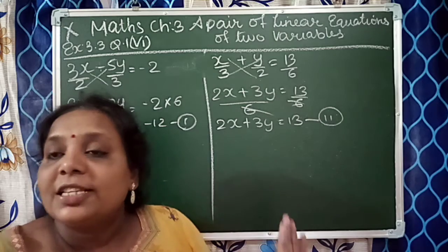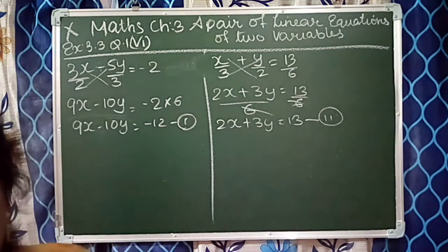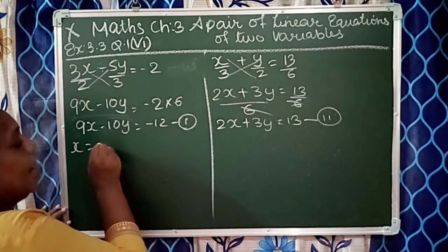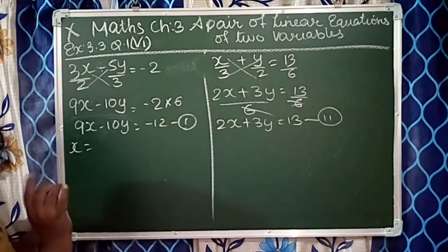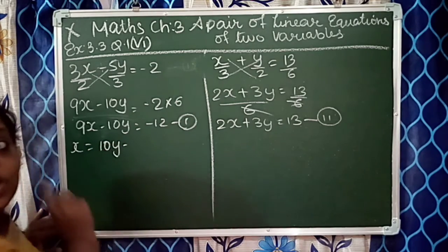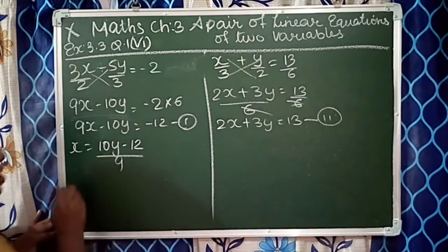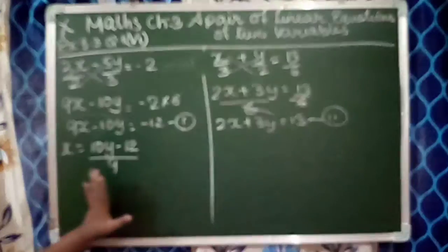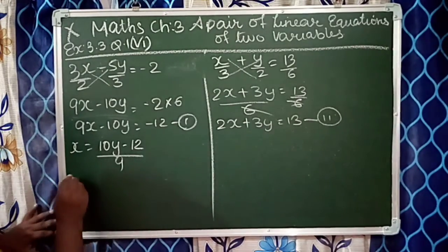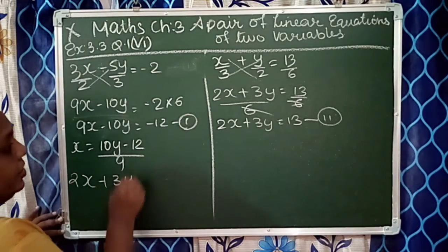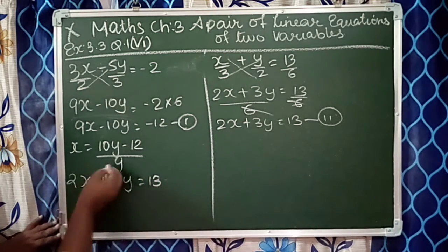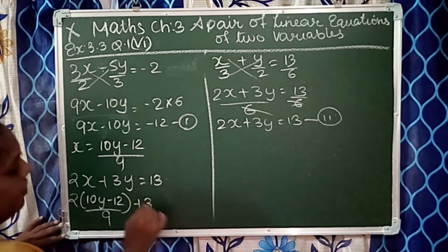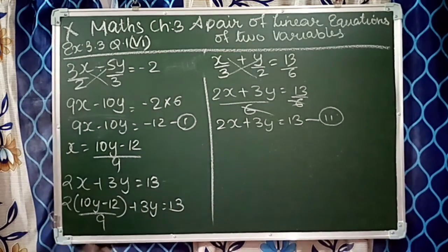Now from the given first equation, we'll find x. x is equal to 10y minus 12, upon 9. We got the value of x. Now we'll substitute the value of this x in equation 2. In equation 2, which is 2x plus 3y is equal to 13, we'll substitute the value.